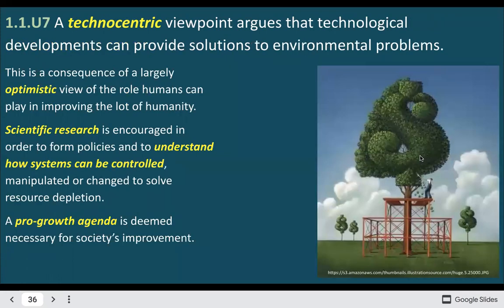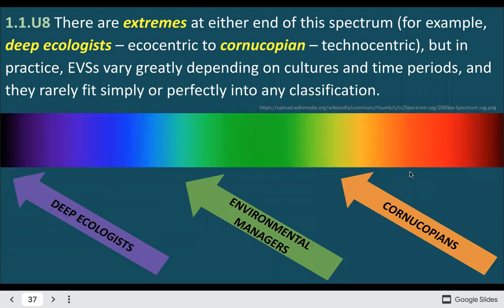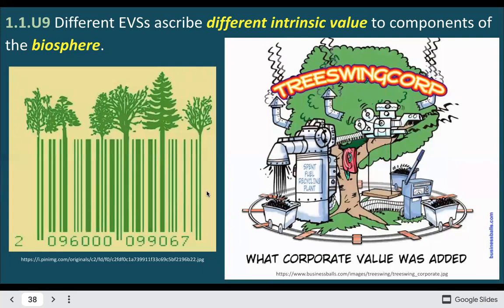Technocentric is the view that we can solve anything with development and technology. This is the real drive behind getting to Mars — if we end up with a planet we can no longer inhabit, we'll be expanding into new worlds. That's a very extreme technocentric view, a bit like a cornucopian, meaning we don't really have to worry about the earth because we can eventually figure out how to inhabit any world. On the other end are the deep ecologists, some of whom are almost extreme to the point of saying we should abandon technology and return to hunter-gatherer lifestyles. Those different EVSs will view intrinsic value differently — that's the worth of species, organisms, or individuals and the right they have to exist, perhaps outside of monetary value.